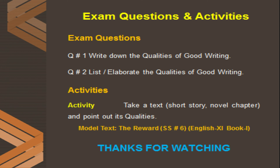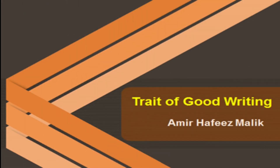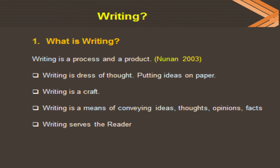Today we talked about the traits and qualities of good writing — what makes good writing. First, we looked at what writing is: writing is both a process and a product. Writing is the dress of thought, putting ideas on paper. Writing is the means of conveying ideas, thoughts, opinions, and facts to others. Writing serves the reader, delivering all the knowledge that the reader needs.